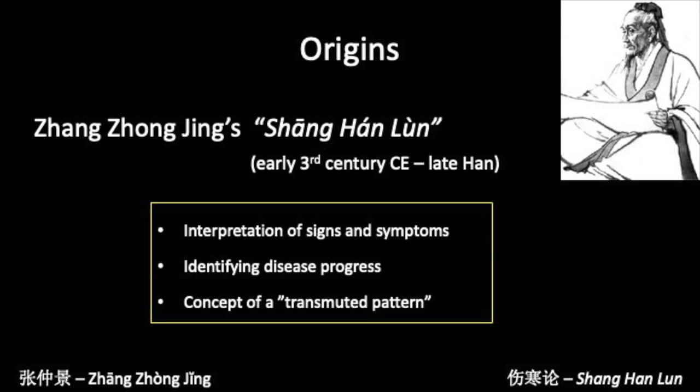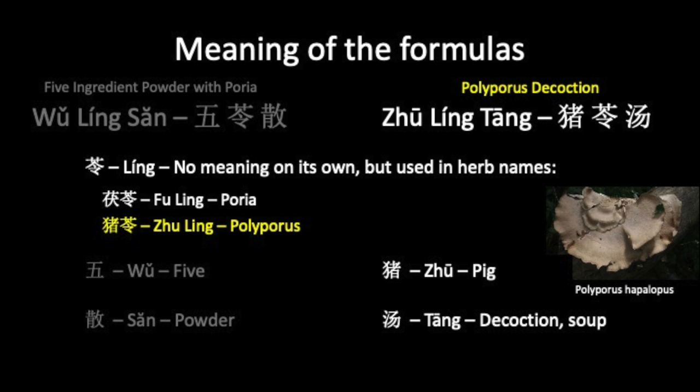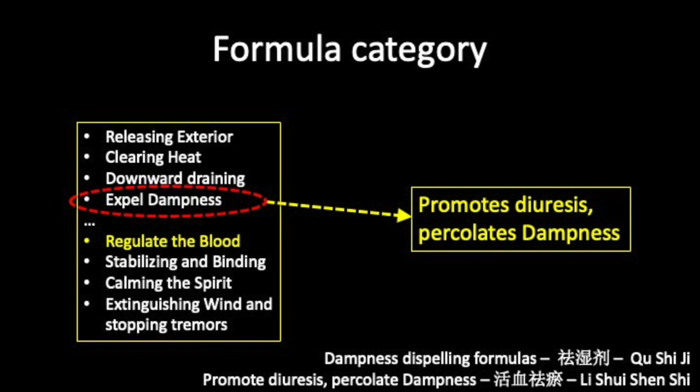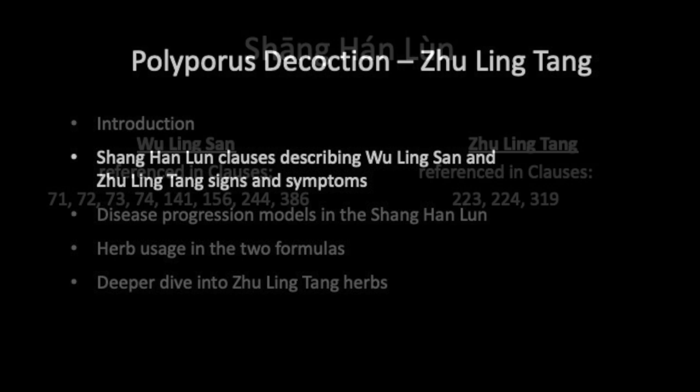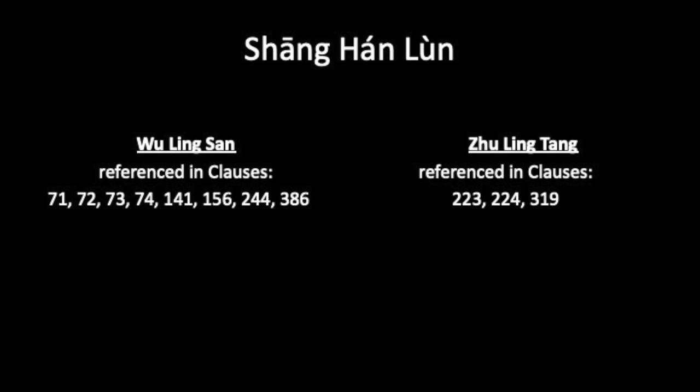The formula's name comes from one of its ingredients, Zhu Ling, or polyporus, which is a fungus etymologically associated with pigs. Like Wu Ling San, it is categorized as a formula that dispels dampness by promoting diuresis and percolating that dampness. To better differentiate between these two formulas, I will review how they are presented in the Shang Han Lun. This slide shows all the clauses referring to Wu Ling San and Zhu Ling Tang.